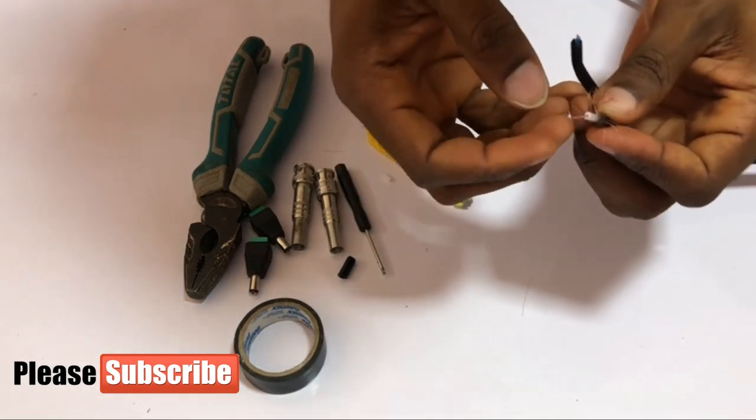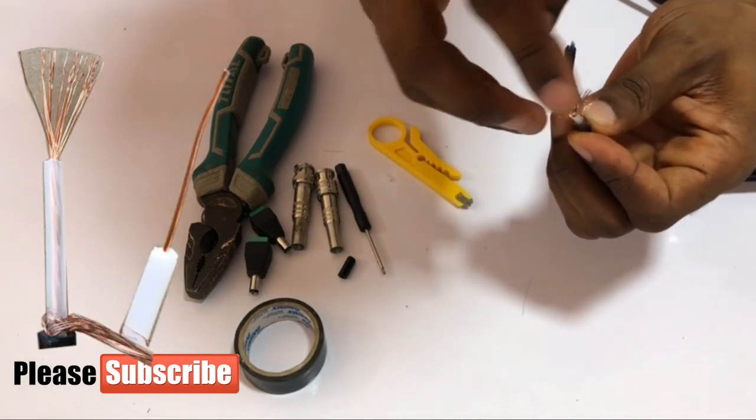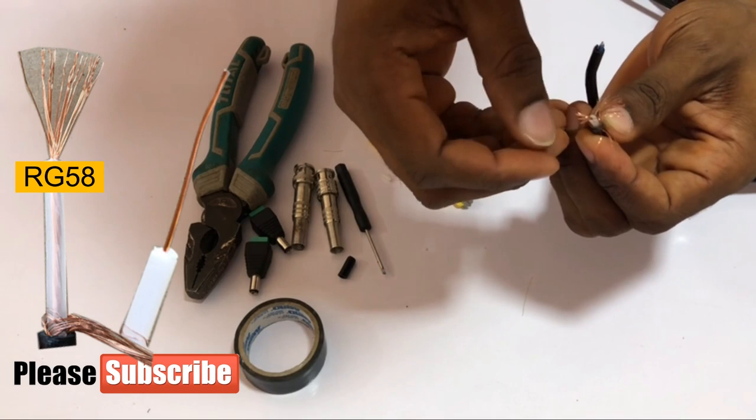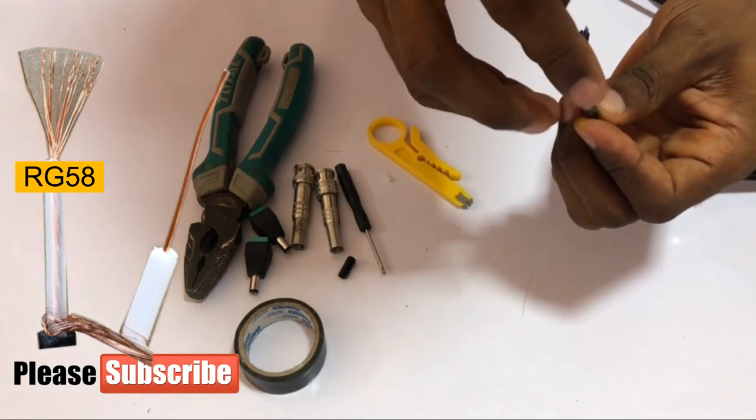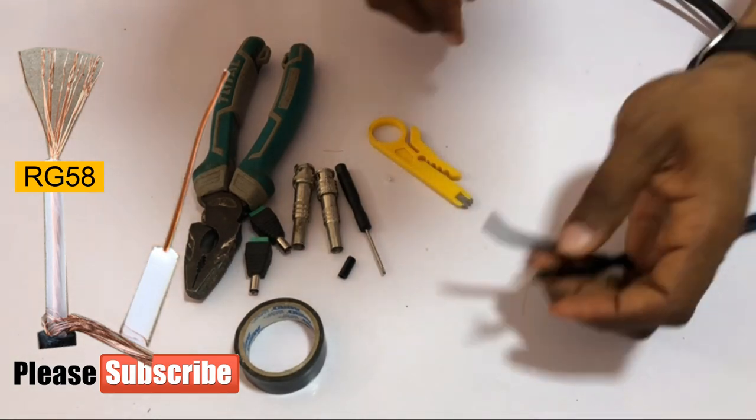This is RG58. If you watch it, it has little strands in the positive part. So this is one of the features that differentiates this from RG59.